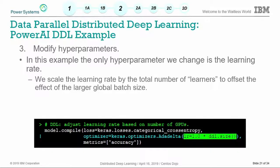The next step is to modify the hyperparameters. The only hyperparameter we're modifying in this case is the learning rate, though you might also modify batch size or learning rate decay. Once you're distributing your program, you're changing what training is actually happening and you really need to tweak your hyperparameters. In this case we're scaling the learning rate by the number of learners, basically trying to offset the increase in effective batch size — since we're distributing, the effective batch size ends up being multiplied by the number of learners, so we're scaling the learning rate up to speed up weight updates to offset that.